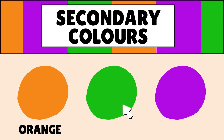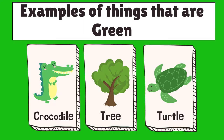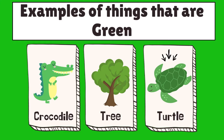Can you guess what color the arrow is pointing? Great! It's the color green. And here, kids, are examples of things that are green in color. Let's review them together. We have the crocodile. Next, we have the tree. And last, we have the turtle.